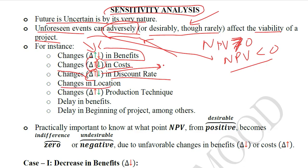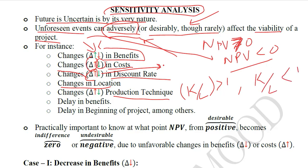Changes in the production technique can also happen. If we come up with a more capital-intensive technique, it is going to yield a better outcome as compared to a labor-intensive technique. So this is another option that we can analyze for the sensitivity analysis of a project.